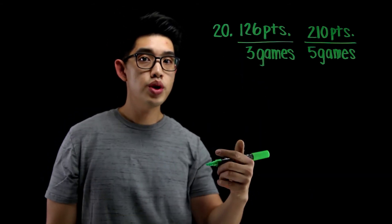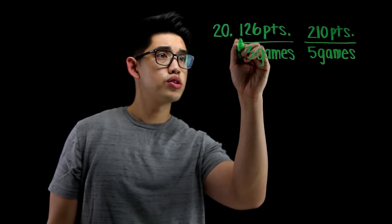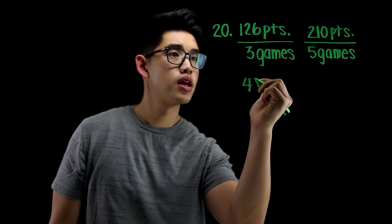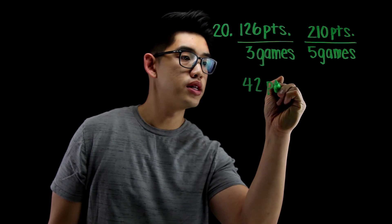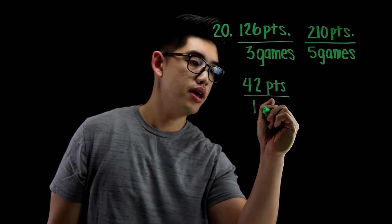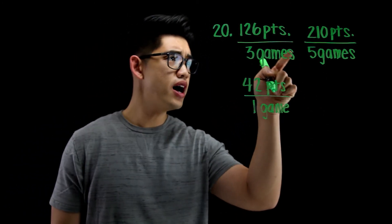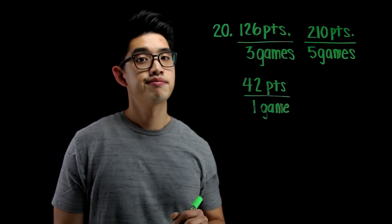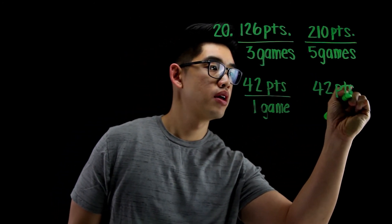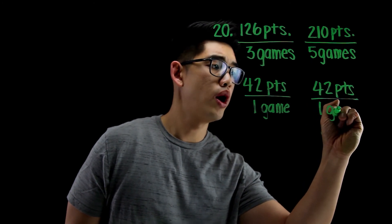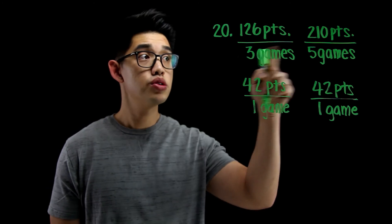126 divided by 3 — I want to figure out how many points they score in 1 game. 3 goes into 12, 4 times. 3 goes into 6, that's 2 times. So that's 42 points in 1 game, or per game. Then I'll do the same thing: 5 goes into 210 — 42 times. So that's 42 points per game as well. That means yes, they are the same. These 2 rates are equivalent.